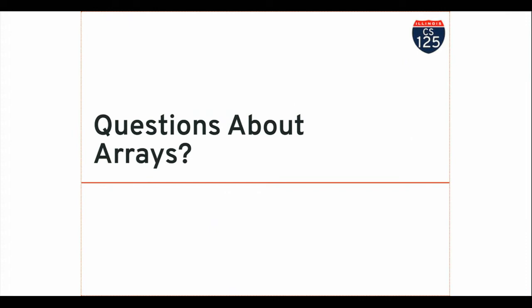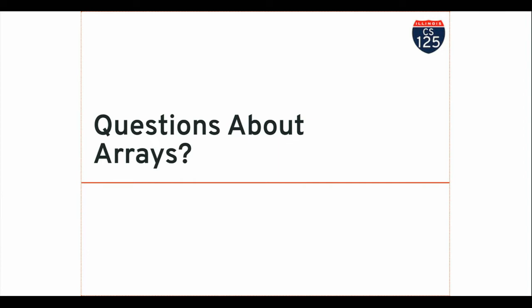So that's an important distinction: when I use the enhanced for loop, the variable doesn't get the index — it gets the value. The first time this runs, 'prime' is set to two — that's the first value in the array. The second time it's set to three, the third time it's set to five. It's not set to zero, one, two. So it stores the data inside the loop, not the index.